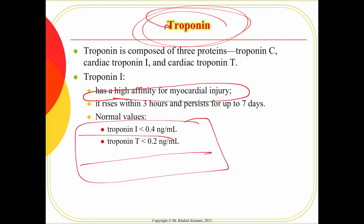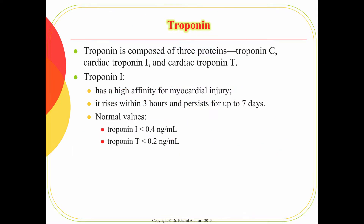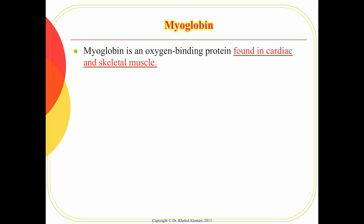The normal troponin values for both troponin I and T should be low. When we suspect MI, we don't rely on a single reading — we do three readings in the first 24 hours, every eight hours. If troponin keeps going up, that confirms myocardial injury. We need three positive readings before we can say this is a confirmed MI.